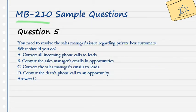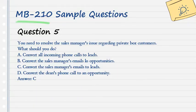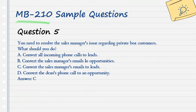Question 5. You need to resolve the sales manager's issue regarding private box customers. What should you do? A. Convert all incoming phone calls to leads. B. Convert the sales manager's emails to opportunities. C. Convert the sales manager's emails to leads. D. Convert the dean's phone call to an opportunity. Answer: C.